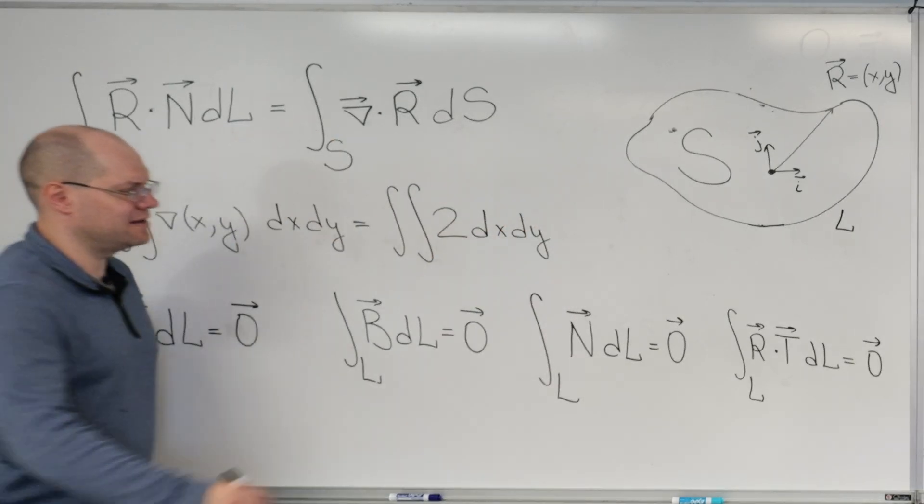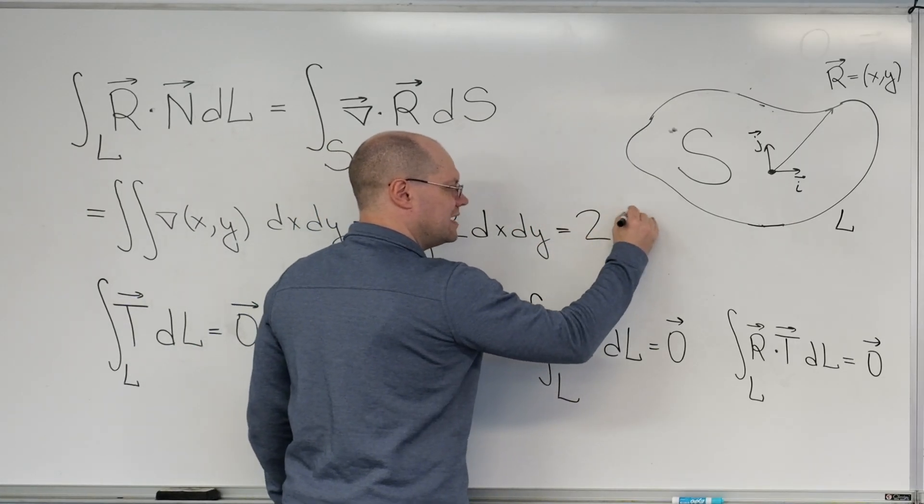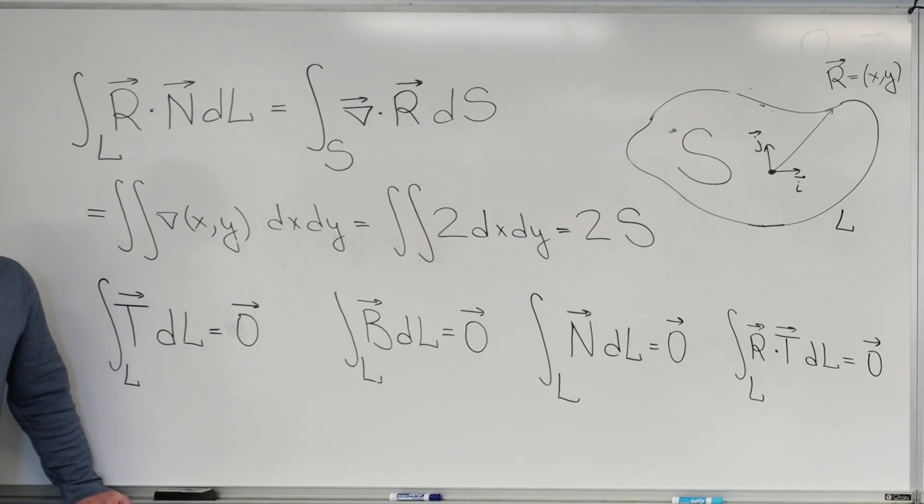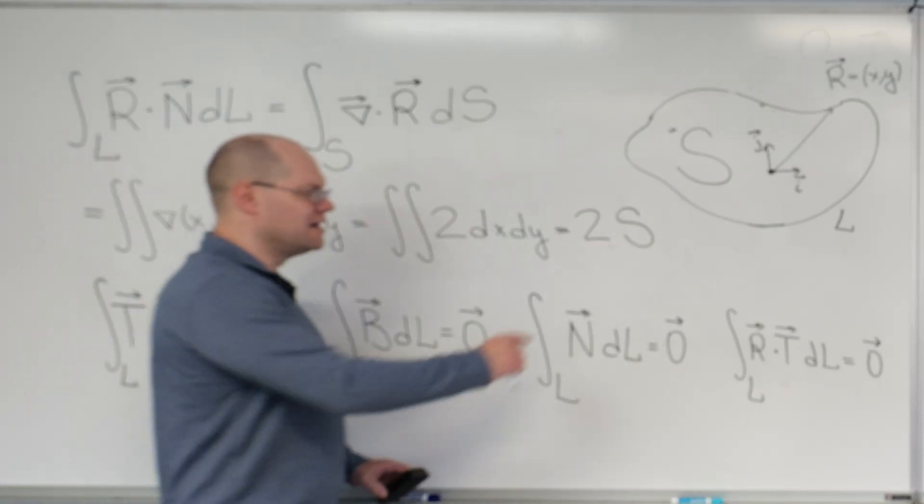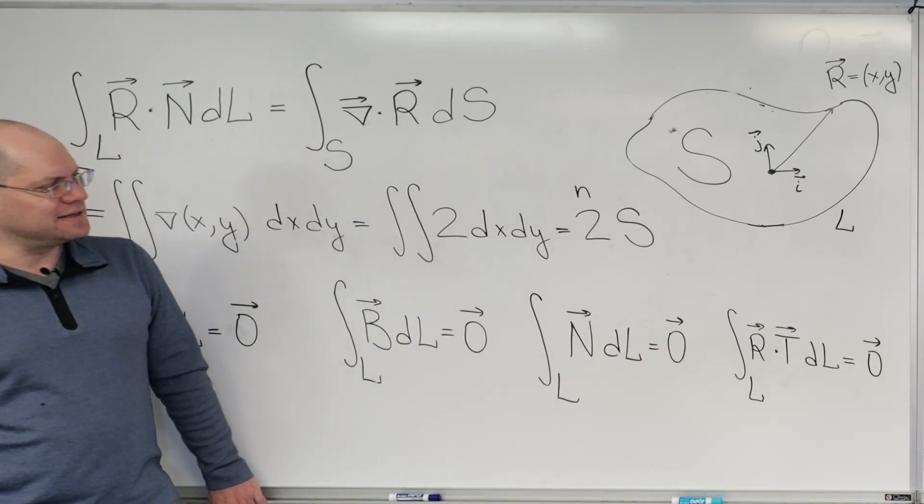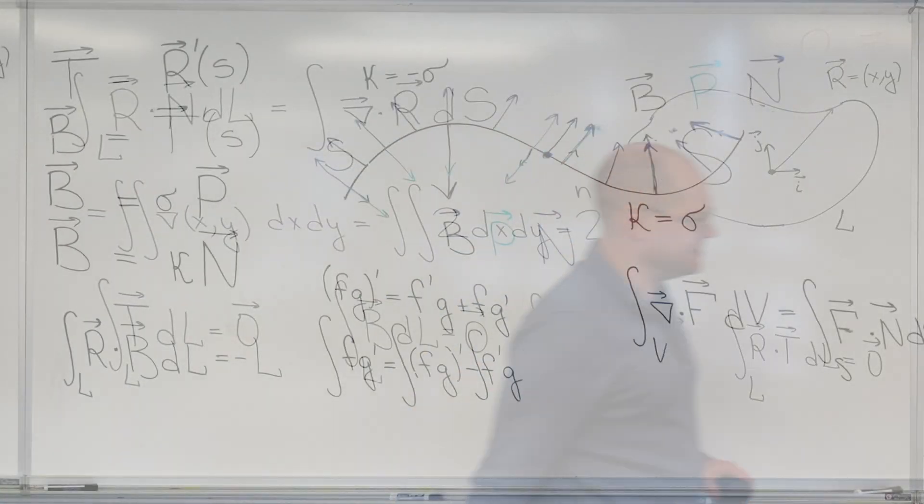So we're integrating two over this domain, and of course the answer is two times the total enclosed area. Is that a beauty? Yes, it's absolutely a beauty. And so the answer is, instead of two, I'm going to use the symbol n, the dimension of the embedding space, because we're in n dimensions.